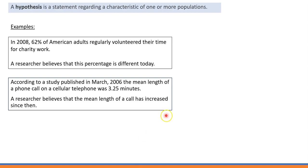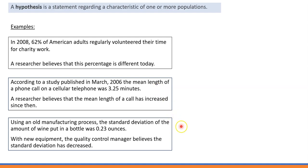The statement there is that the mean length of a phone call on a cellular telephone was 3.25 minutes. And here's the last example. Using an old manufacturing process, the standard deviation of the amount of wine put in a bottle was 0.23 ounces. With new equipment, the quality control manager believes the standard deviation has decreased.